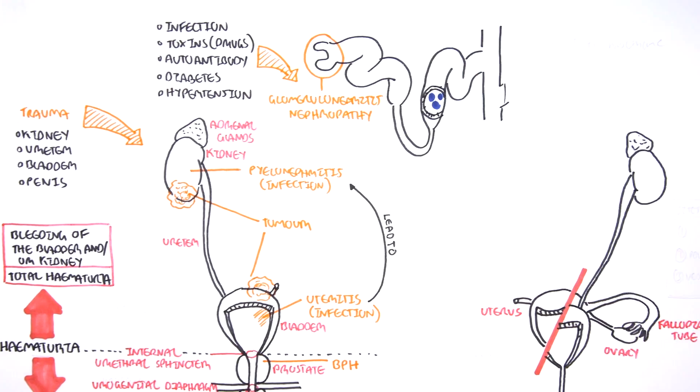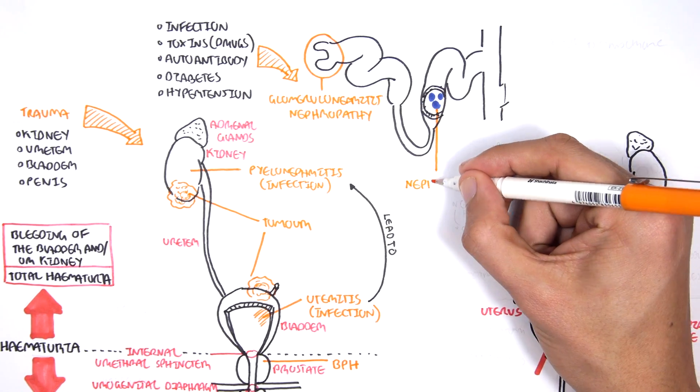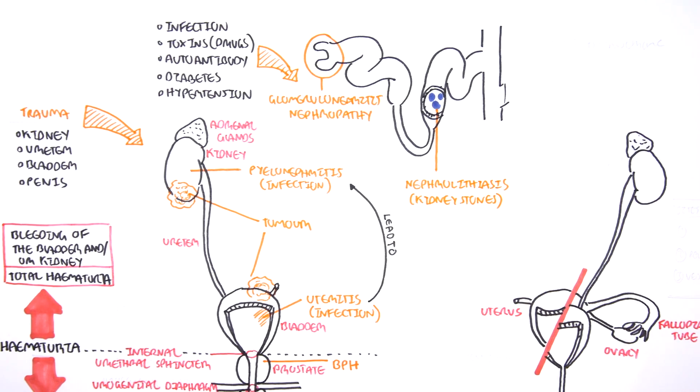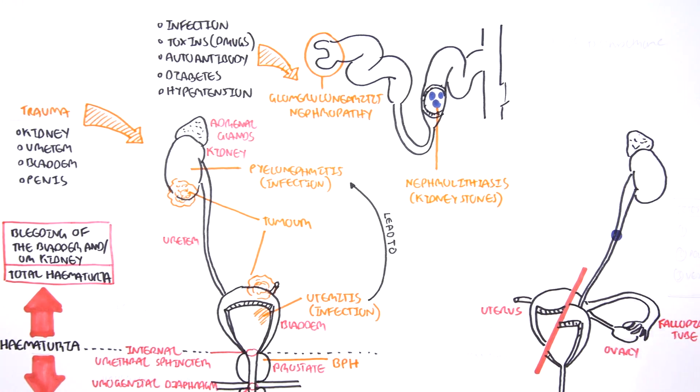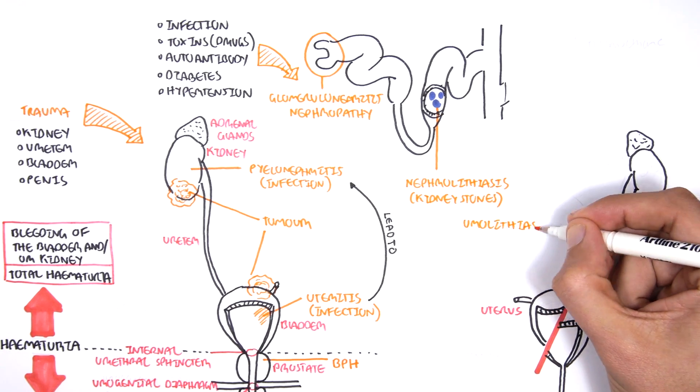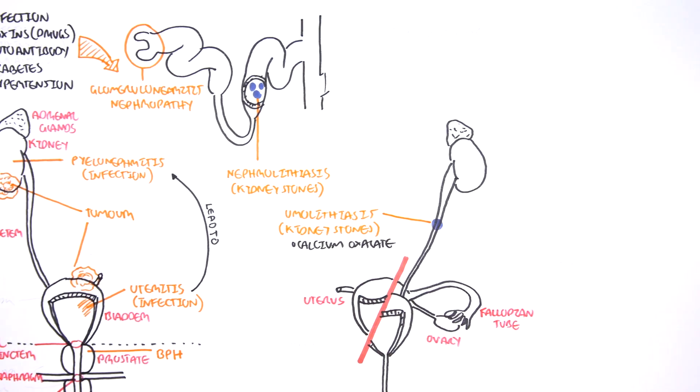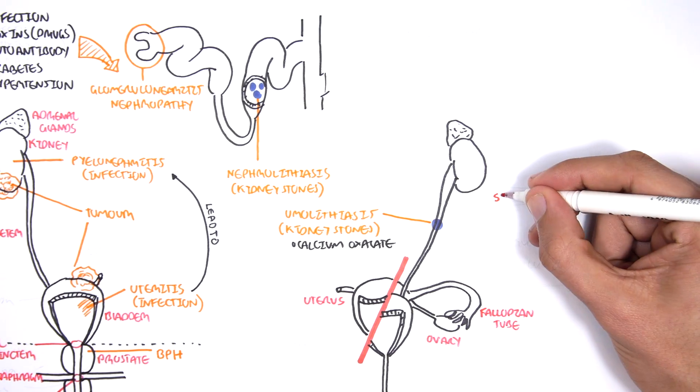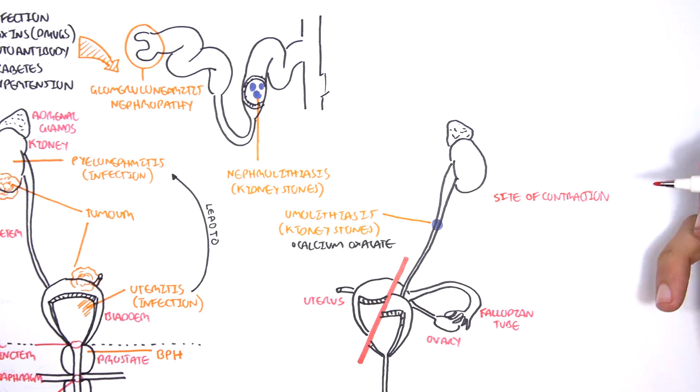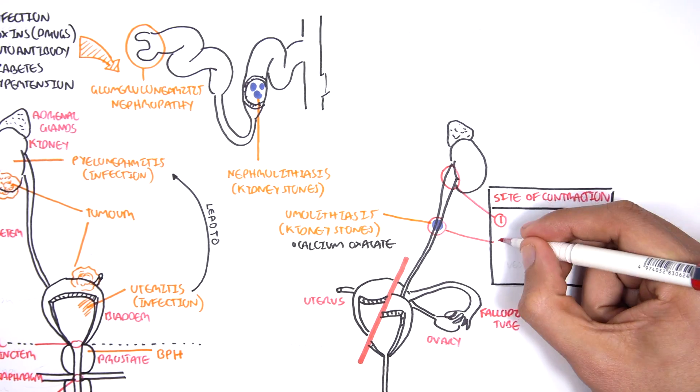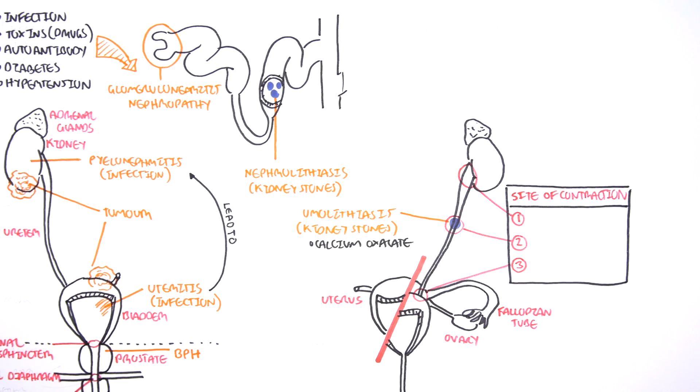Nephrolithiasis is kidney stones, so kidney stones could lead to hematuria. And then you have kidney stones that actually lodge in the ureter itself, and this is known as urolithiasis. Urolithiasis, which are kidney stones in the ureter, are formed by calcium oxalate most of the time. They lodge in specific sites within the ureter, mainly the beginning, middle, and end. These are the sites of contraction of the ureter, and that's why the kidney stones most often lodge there.